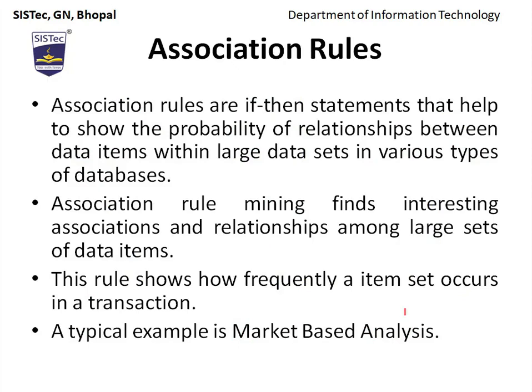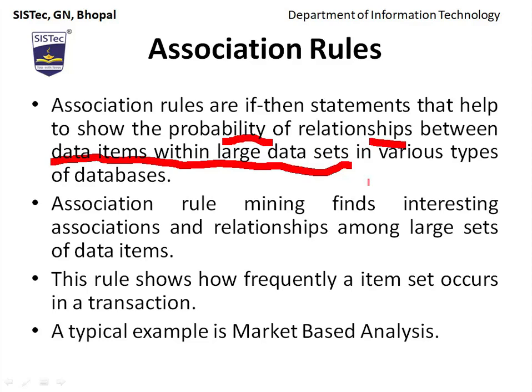The next topic is association rules. Association rules are if-then statements. In simple words, if there is a probability of event X, then there must be a certain probability of Y — meaning there is some relationship between X and Y. Association rules are if-then statements that help show the probability of relationship between data items within large datasets in various types of databases.